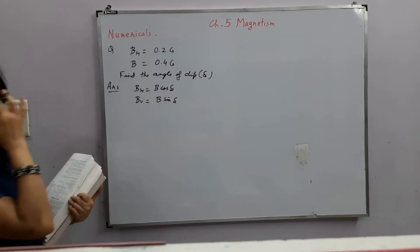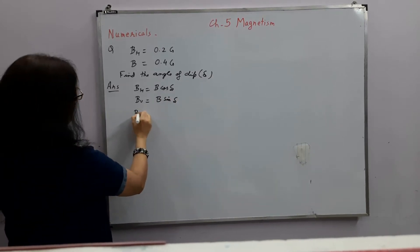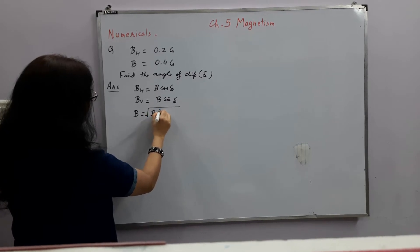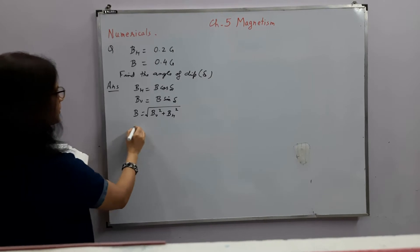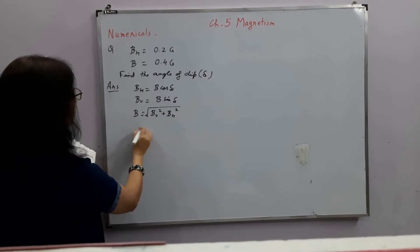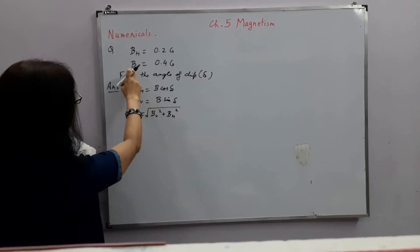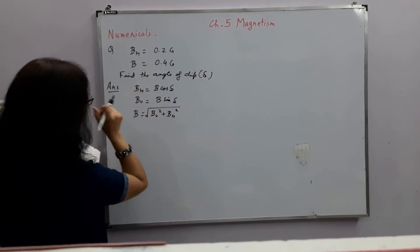What is the relation between these two? B is equal to under root of BV square plus BH square. So if we put the values, we have to find angle of dip.